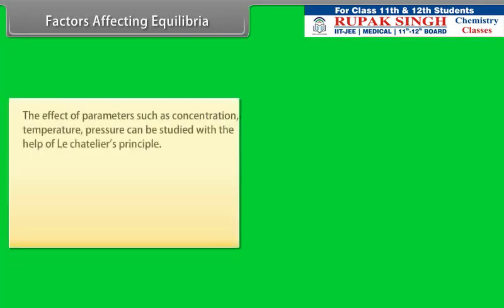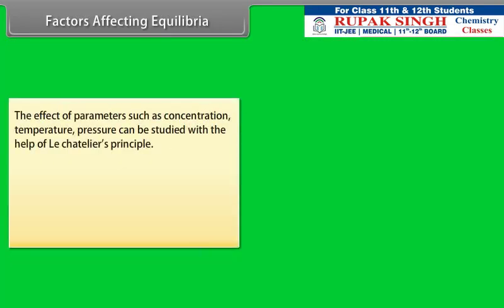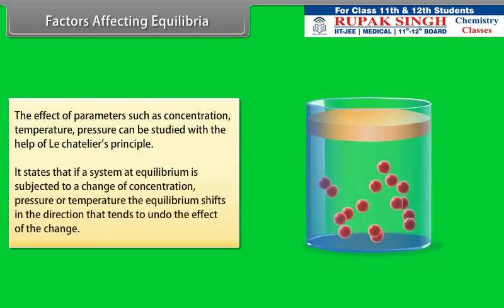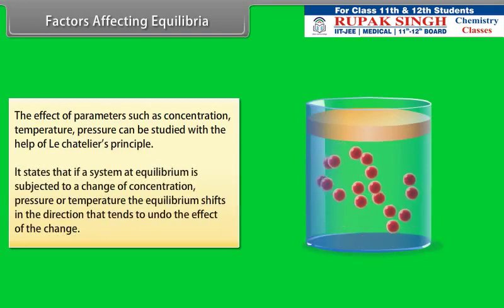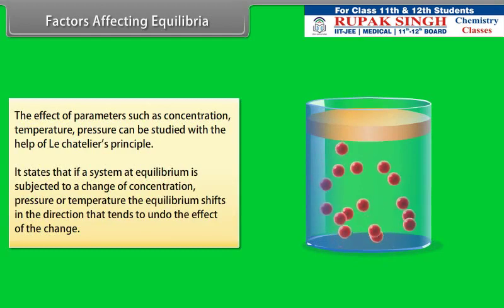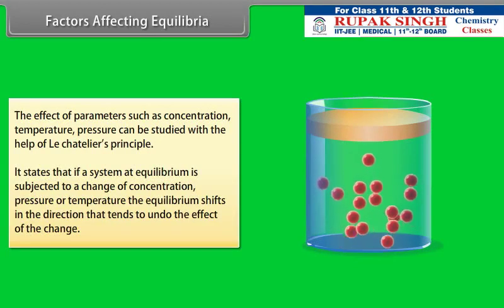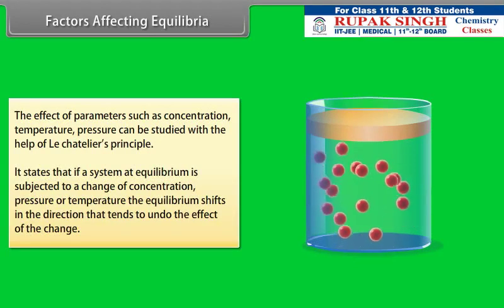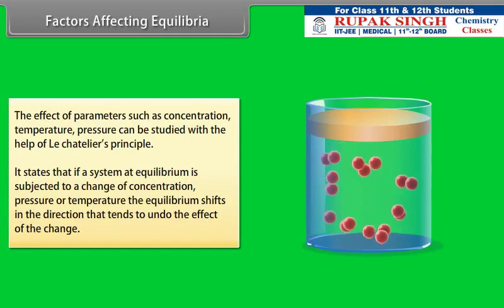Factors Affecting Equilibria: The effect of parameters such as concentration, temperature, and pressure can be studied using Le Chatelier's principle. It states that if a system at equilibrium is subjected to a change of concentration, pressure, or temperature, the equilibrium shifts in the direction that tends to undo the effect of the change.